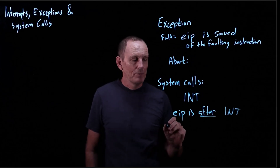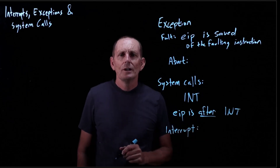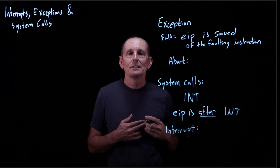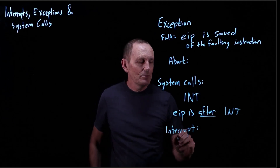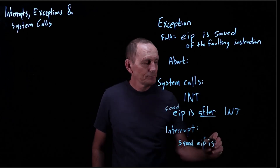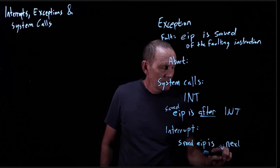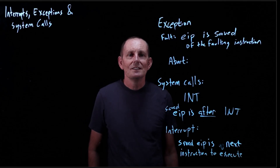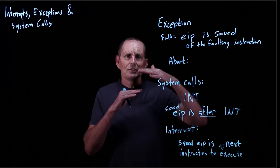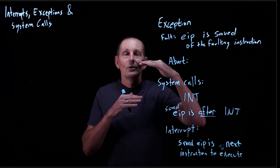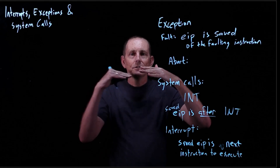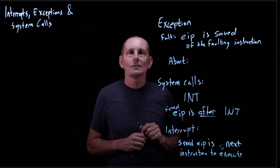Finally, we have interrupts. An interrupt basically says some IO device wants attention. The saved EIP is the next instruction that's going to execute, so interrupts are just sandwiched between two instructions. We execute one instruction, the interrupt occurs, and when it returns, it goes back to that next instruction.